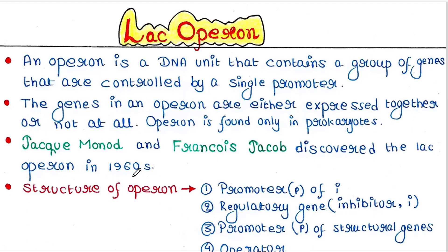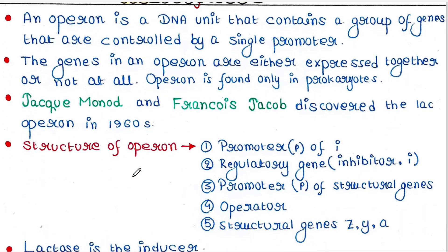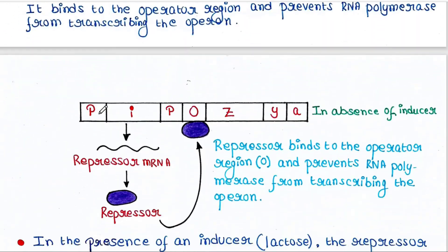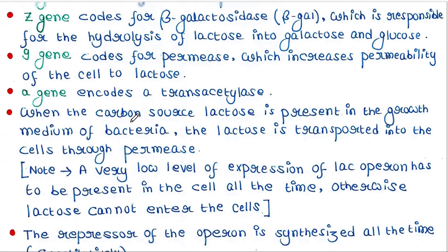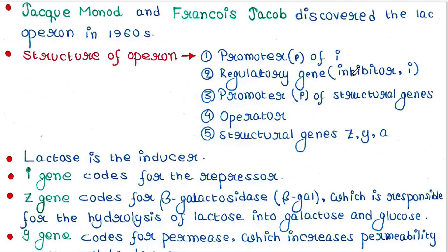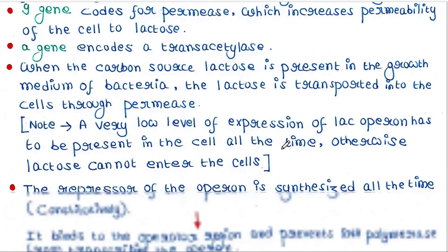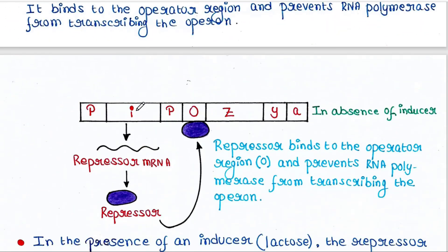Let's talk about the structure of the operon. Here we have the basic structure. P means this is the promoter, and upstream of this promoter is the promoter of the i gene. The i gene is basically the regulatory gene — this is the inhibitor gene.